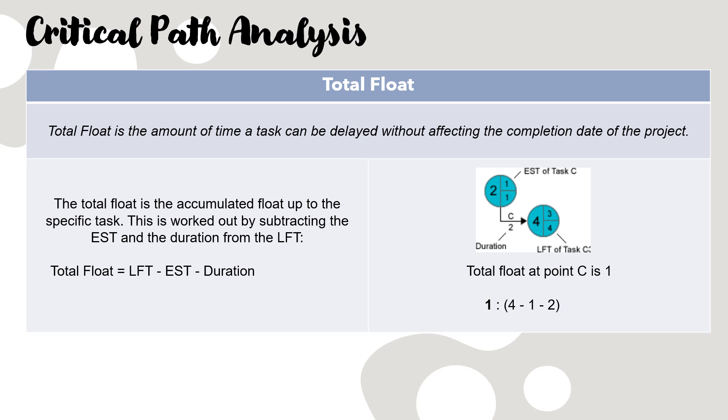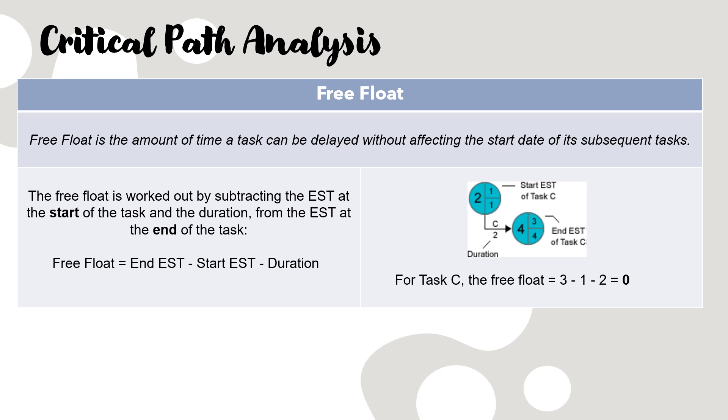You will also be expected to calculate float. There are two separate types of float: total float and free float. You need to know the definition of both and how to calculate them. Total float is the amount of time a task can be delayed without affecting the completion date of the project. It's the cumulative float up to a specific task, and there's the formula. Take a look at it - fairly simple arithmetic, but you need to be able to calculate that, know what it is. Free float - same idea. The only difference with free float is it's the time a task can be delayed without affecting the start date of the subsequent task, the next task, and a slightly different calculation. Make sure you can calculate free float and total float.